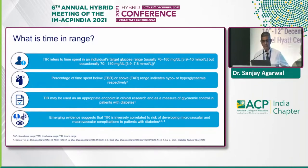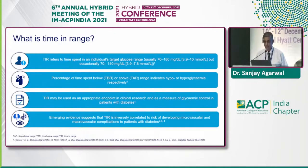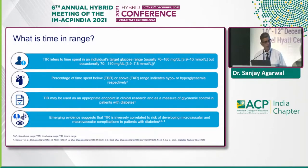So what do we really mean by Time in Range? It refers to the percentage of time in a day that a patient is between 70 and 180 mg/dL — that is what we call good Time in Range, and the majority of our patients should be within that range. For tight glycemic control, the target is how much time patients spend between 70 and 140. We also talk about time above range and below range to indicate hyper- and hypoglycemia. Time in Range may be a more appropriate endpoint for clinical research, and there is now emerging evidence that TIR is inversely correlated with risk of developing micro- and macrovascular complications.